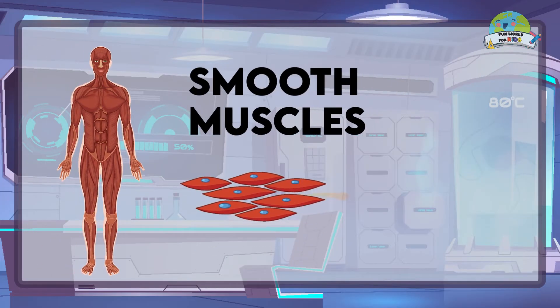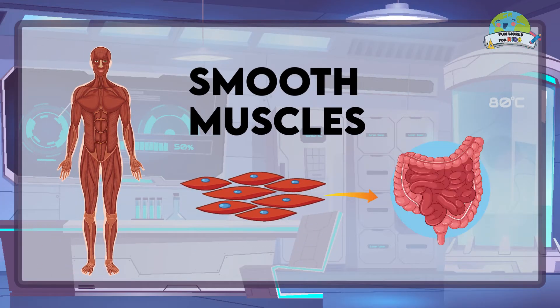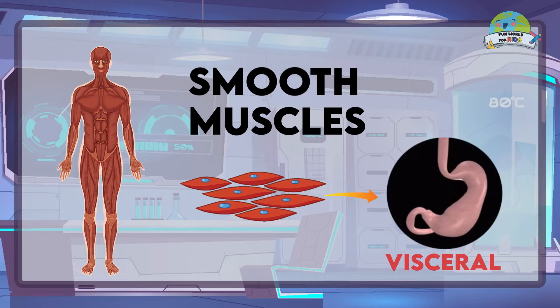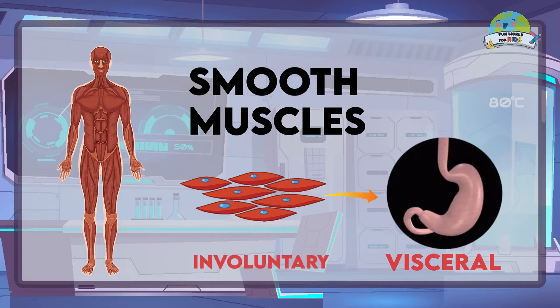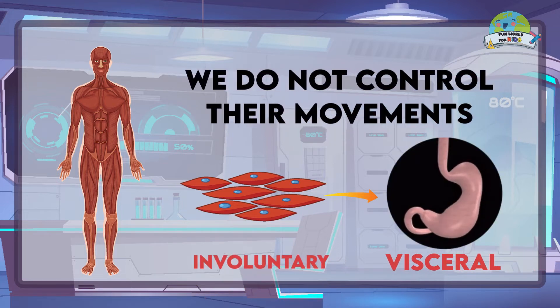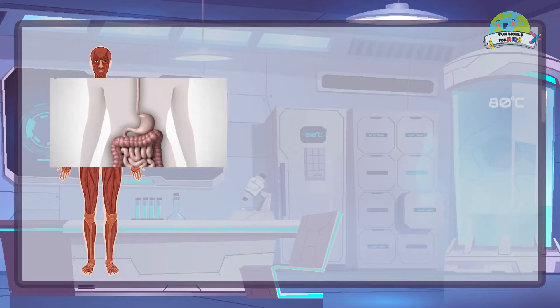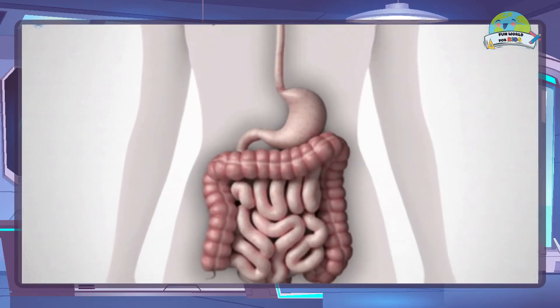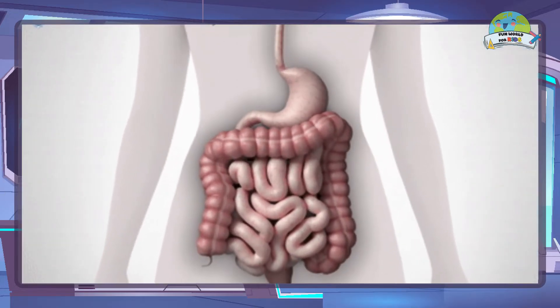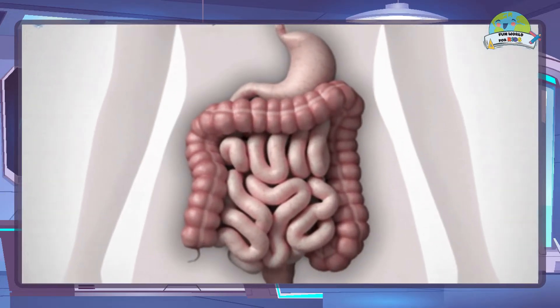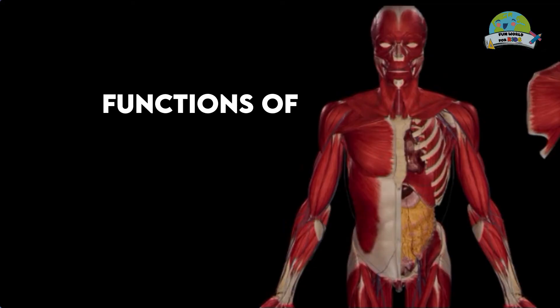Smooth muscles. They are also known as visceral or involuntary, since we do not control their movements either. For example, the movement of the intestines or the digestive tract.